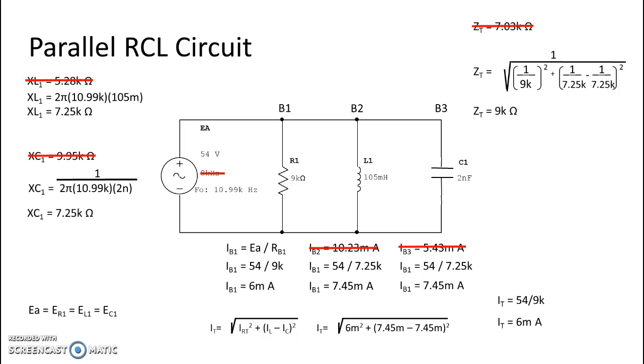And that is, of course, because there's only one component in each branch. And we know that voltage is constant in a parallel circuit. And that is the long and the short of resonance in a parallel LCR circuit.